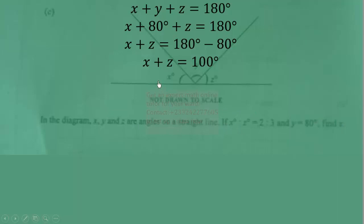Now what are we looking for? We are looking for x. And we know that x plus z have a total of 100 degrees angle. So it's like x and z are sharing an angle of 100 degrees in the ratio 2 is to 3. That is how you can think of it so that you can do it and understand the solution.